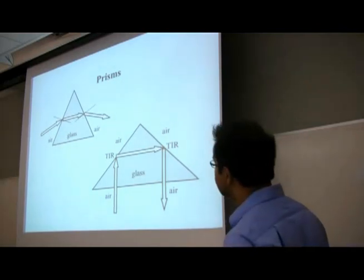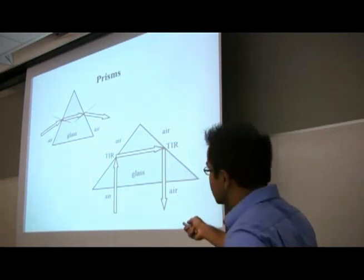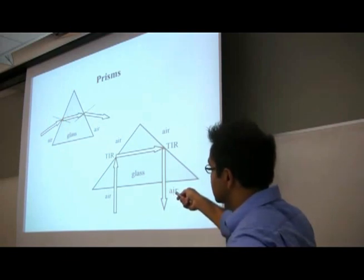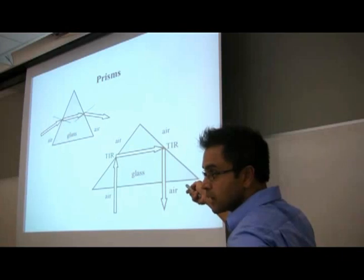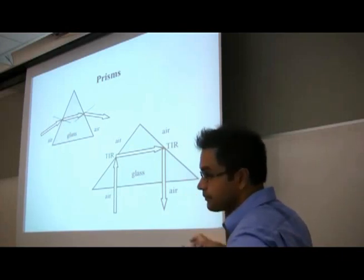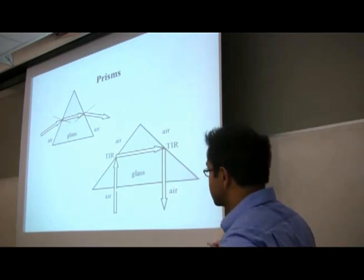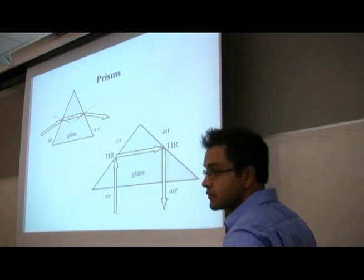Prisms can have many shapes — typically a prism made of glass. If you have light coming in, because the index of glass is higher than that of air, it will bend towards the normal. When going from a high-index medium to a low-index medium, it goes away from the normal — larger angle in, smaller angle out. You can also have total internal reflection when going from glass to air, if the angle with respect to the normal is larger than the critical angle.